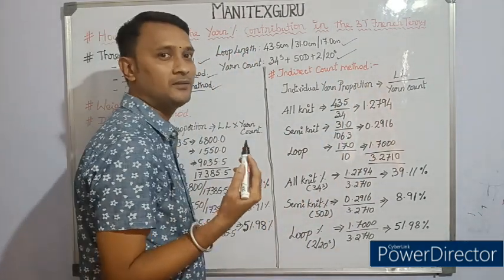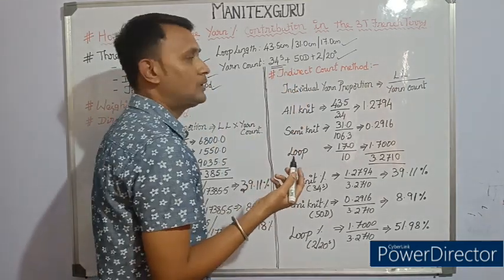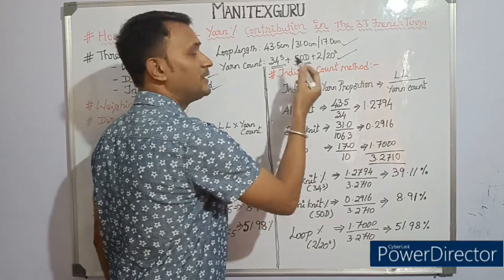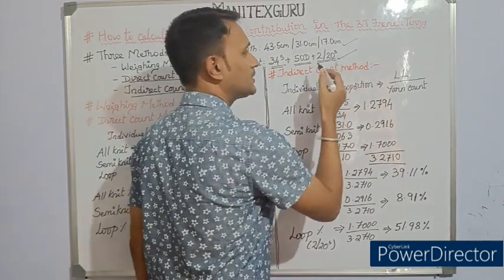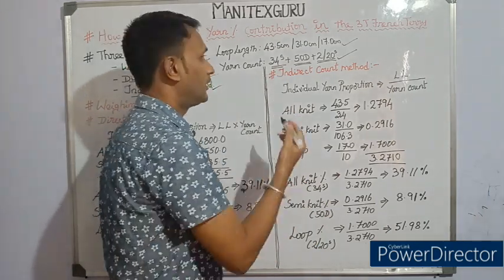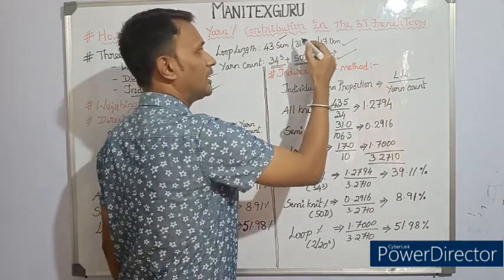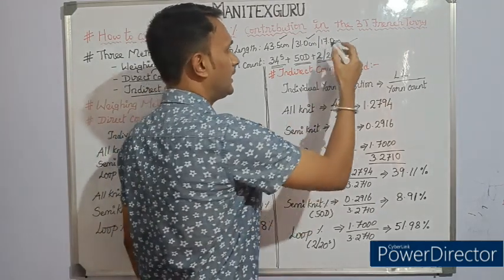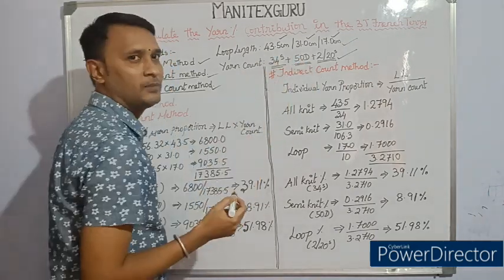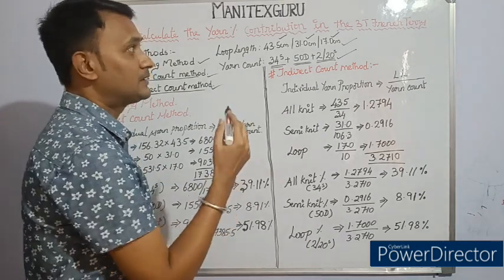Since this is a three-thread French terry, obviously three different yarn counts will be used. I have taken an example with a three-thread French terry knitted with 34s cotton in the all-knit, 50 denier poly in the semi-knit, and 2-bar 20s twisted yarn in the looper. The corresponding loop lengths are 34.5 cm in the all-knit, 31 cm in the semi-knit, and 17 cm in the looper.